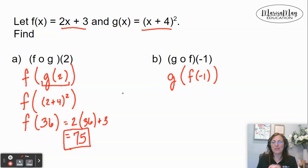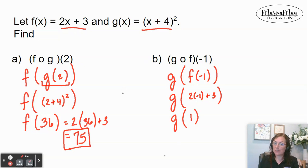So that would look something like 2 times -1 plus 3. Now 2 times -1 is -2, and -2 plus 3 is 1. So now I'm looking for g of 1.